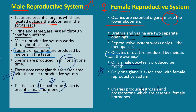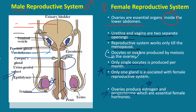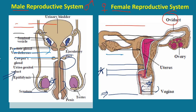The last point is that the testes secrete testosterone, which is the essential male hormone, whereas the ovaries produce estrogen and progesterone, which are essential female hormones. Now you can see the picture of the male reproductive system and female reproductive system. The scrotal sac and urethra are common in the male reproductive system, whereas you can see the vaginal opening and urethral opening are different in the female, and on both sides there is an ovary. That was all the difference between the male reproductive system and the female reproductive system.